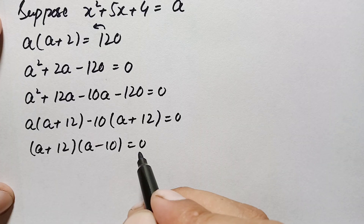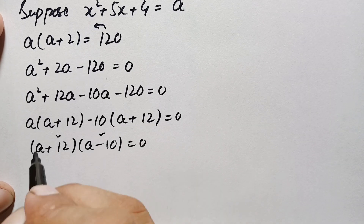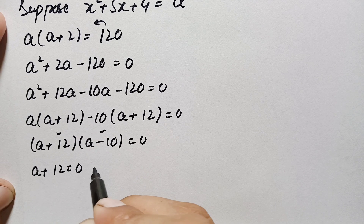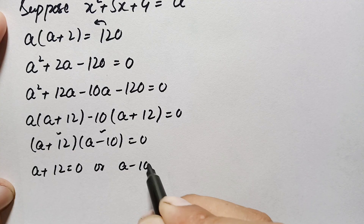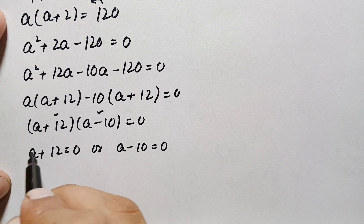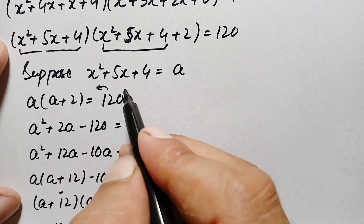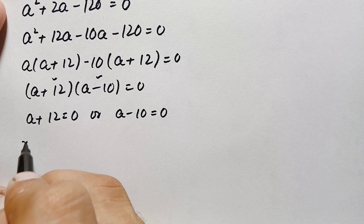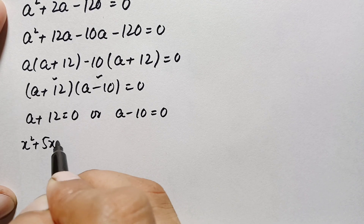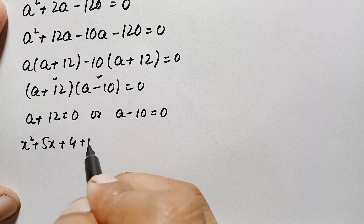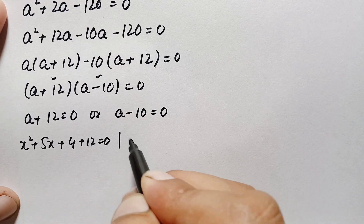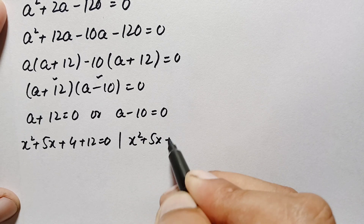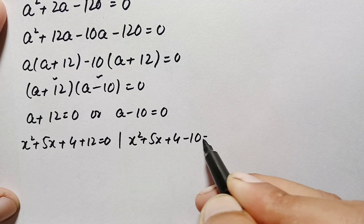Since the product is zero, either a+12 = 0 or a−10 = 0, giving a = −12 or a = 10. Now we replace a with its value x²+5x+4. These two equations become: x²+5x+4+12 = 0, and x²+5x+4−10 = 0.